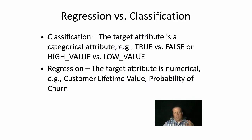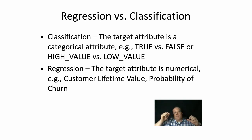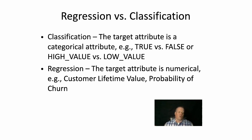Another distinction useful to think about is regression versus classification. Classification means the target attribute is a categorical variable — true vs. false, high value vs. low value, or high vs. medium vs. low. Regression means the target attribute is numerical, such as customer lifetime value or probability of churn. There is some mapping between the two: if you have 100 classes in a classification problem, you're getting closer to regression, and if a regression target can be bucketed into high vs. low value, you're moving into classification.